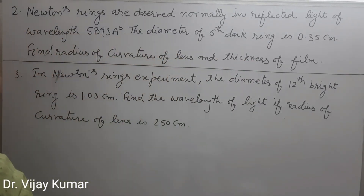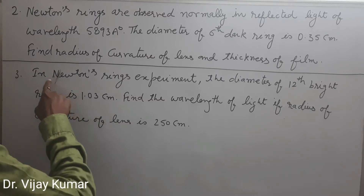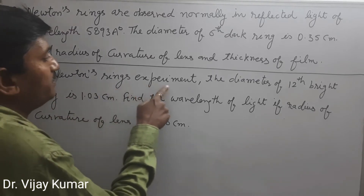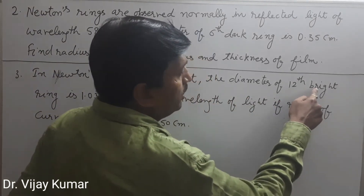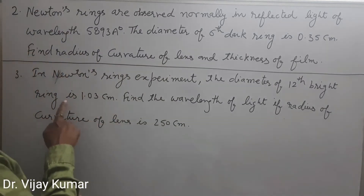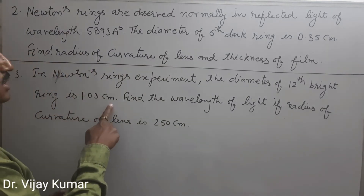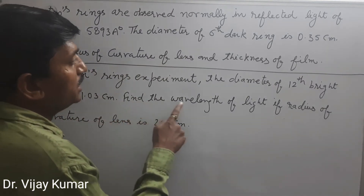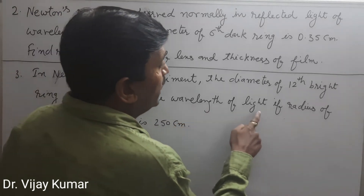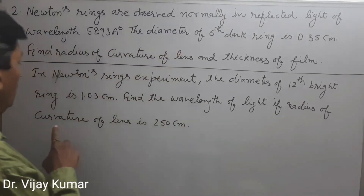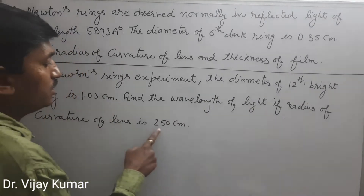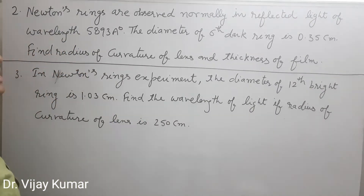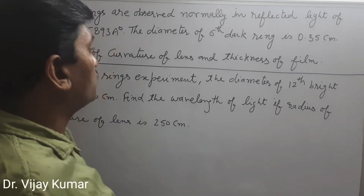You have to solve that problem. The third problem which you have to solve: in Newton's rings experiment, the diameter of the 12th bright ring is 1.03 centimeter. Find the wavelength of light, given the radius of curvature of the lens is 250 centimeter.